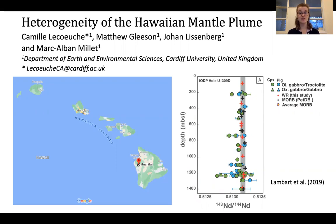Historically, the geochemistry of erupted mid-ocean ridge basalts and ocean island basalts has been used to constrain the chemical heterogeneity of the depleted mantle and mantle plumes.